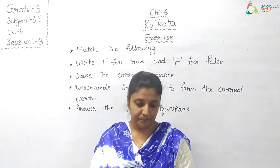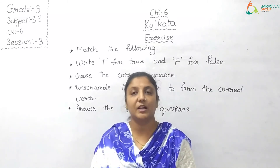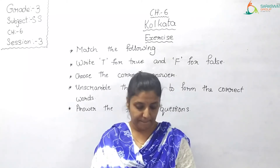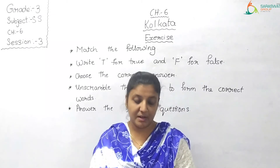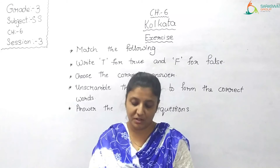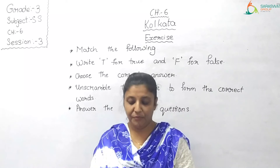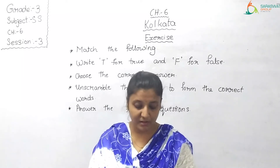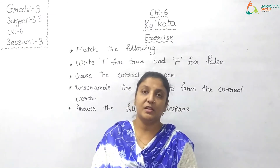C: The city of Kolkata was formed in the year dash. Options: 1. 1690 CE, 2. 1968, 3. 1869, 4. 1896. The correct answer is number 1: 1690 CE.